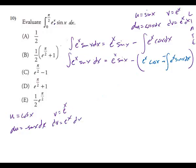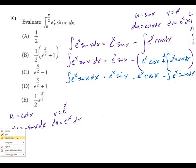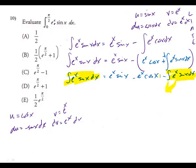Distributing the negative: we get e to the X sine X minus e to the X cosine X, minus the integral of e to the X sine X, DX. Notice that the integral of e to the X sine X appears on both sides. Adding it to the other side gives: two times the integral of e to the X sine X, DX equals e to the X sine X minus e to the X cosine X.